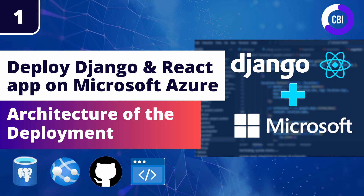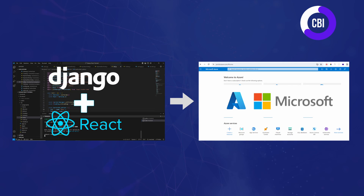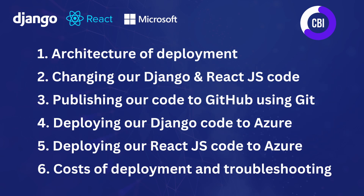Hi everyone and welcome to a brand new video on the CBI channel. In this new tutorial series we're going to be deploying a full stack web application with Python Django in the back end and React.js in the front end, and we're going to deploy that application on Microsoft's cloud platform called Microsoft Azure.